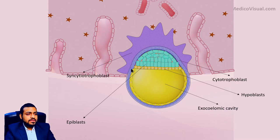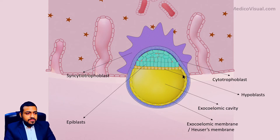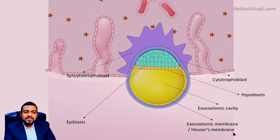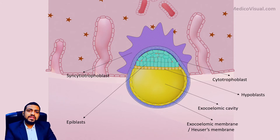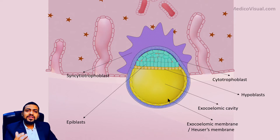This is the exocelomic cavity. The hypoblast-derived cells initially were low cuboidal but they differentiated into squamous or flattened cells. With that reference, the name of this wall or membrane of the exocelomic cavity is the exocelomic membrane. It has another name — Heuser's membrane — in honor of Dr. Chester Heuser, an American embryologist who first described this membrane. So this cavity is the exocelomic cavity and the membrane is the exocelomic membrane or Heuser's membrane.